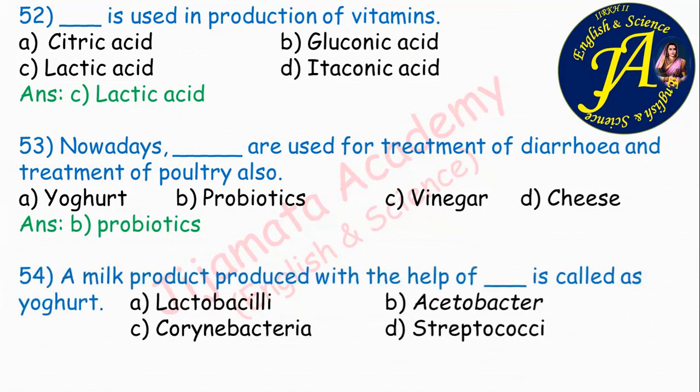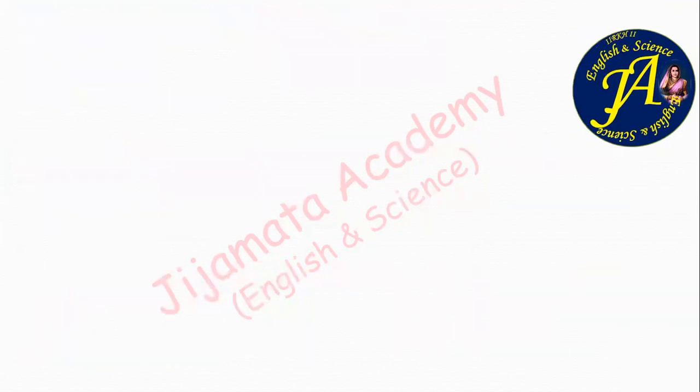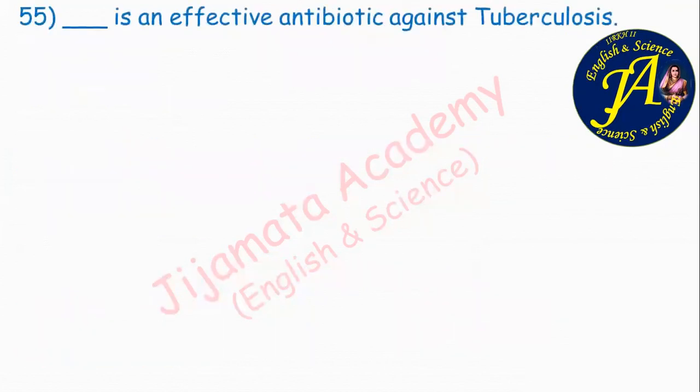A milk product produced with the help of dash is called yogurt. Options are lactobacilli, acetobacter, corynebacteria, streptococci. Correct answer is option A: lactobacilli. Lactobacilli is used to produce yogurt.